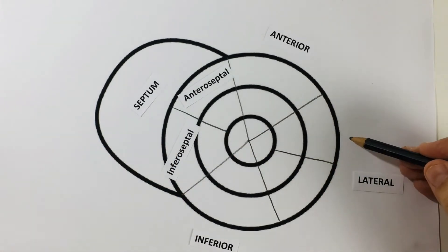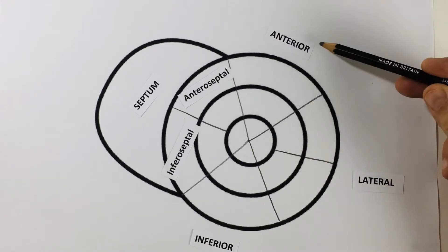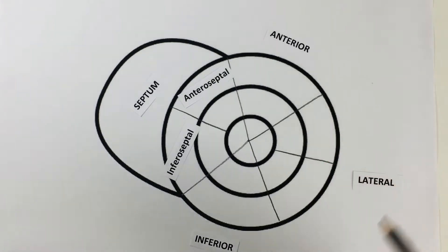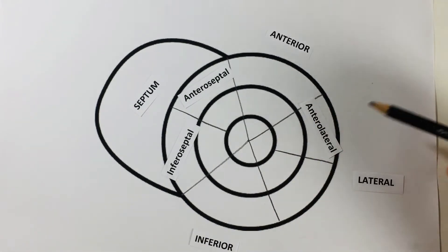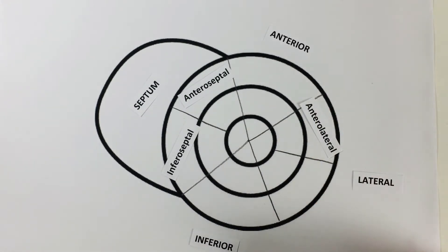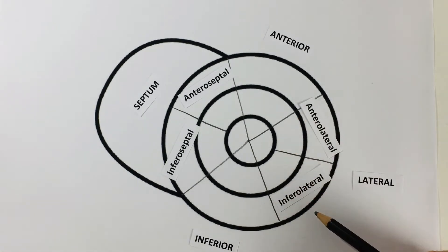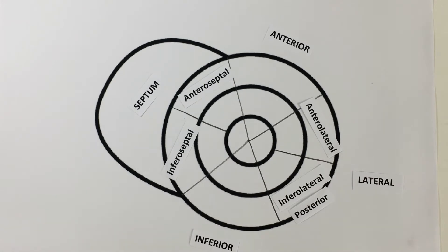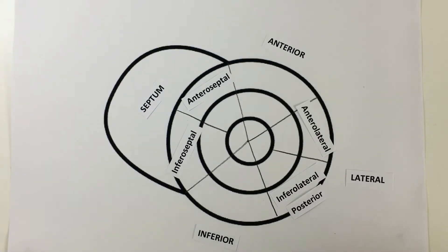Going across to the lateral wall: this part closest to the anterior wall will be called the anterolateral wall, and this part closest to the inferior wall will obviously get the name inferolateral wall. There's another name for the inferolateral wall — that's the posterior wall. Different labs and people who have trained in different institutions around the world will choose to go between those words when describing the function or the location of that wall.